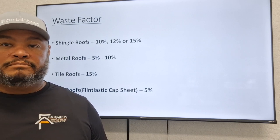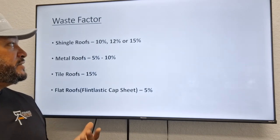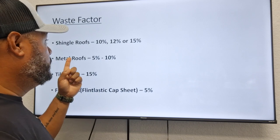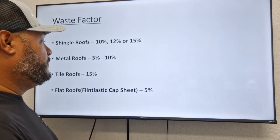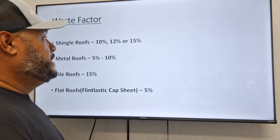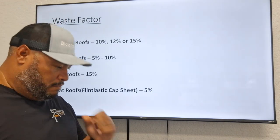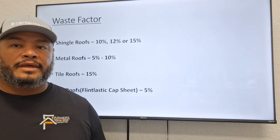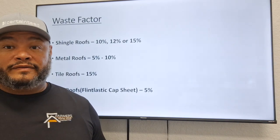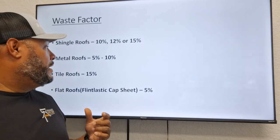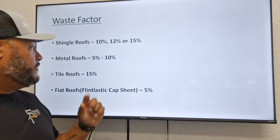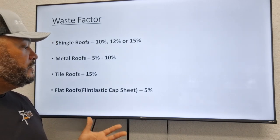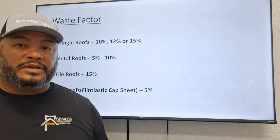Some roofs have 10%, 12%, or 15% waste factor. For example, shingle roofs are usually going to be 10% for a gable, 12% for a hip, and if the hip gets kind of complicated there's going to be more waste. Metal roofs are typically 5 to 10%, tile roofs we usually bid out at 15%, and flat roofs are usually 5% because there's really not much waste.